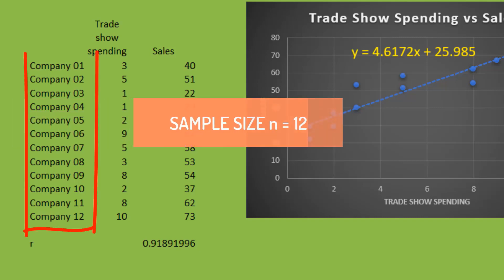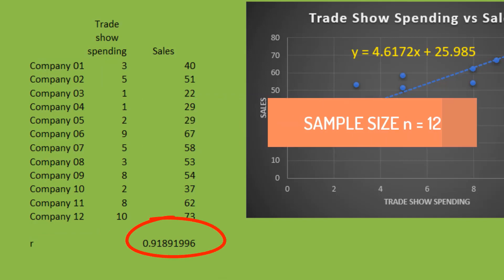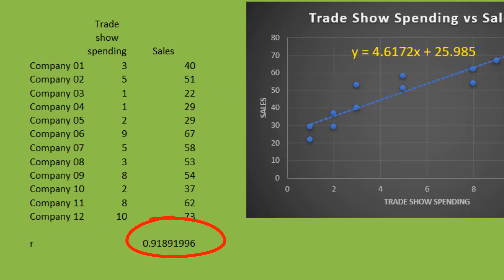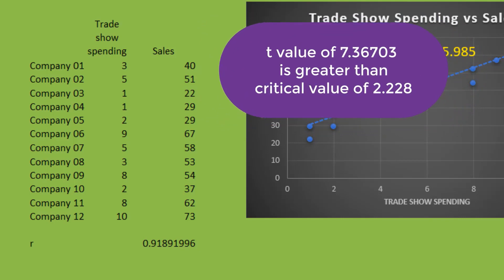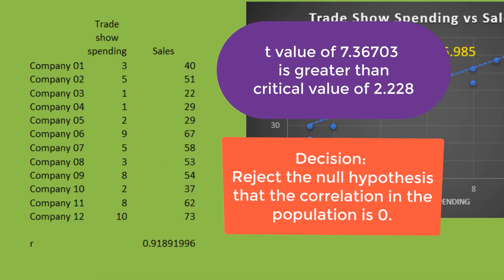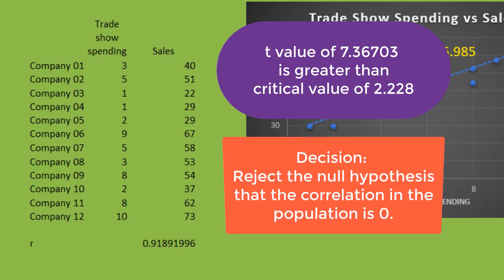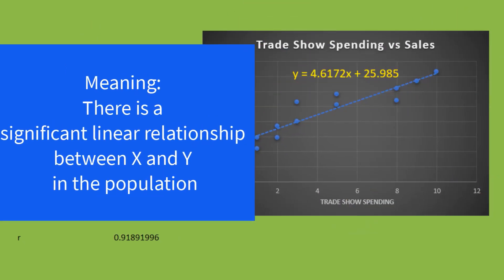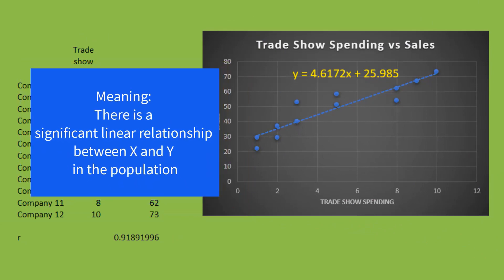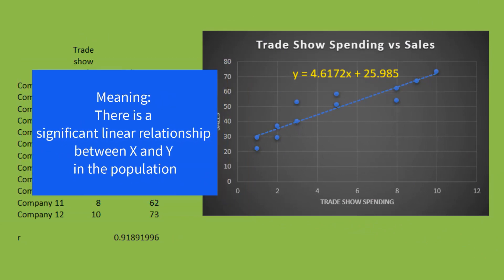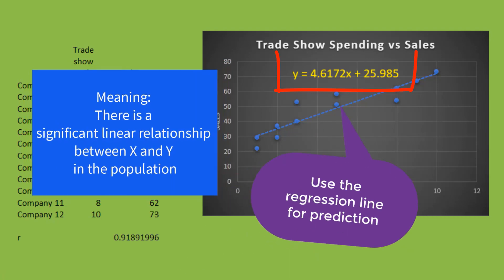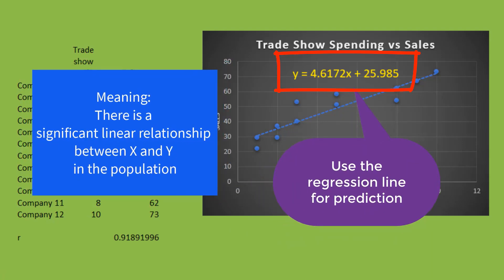Our other video shows that a sample of 12 companies with sample correlation coefficient of 0.91892 results in a t-value of 7.36703 and a decision to reject the null hypothesis that the correlation in the population is equal to zero, which means there is a significant linear relationship between x and y in the population, and the regression line can be used for prediction.